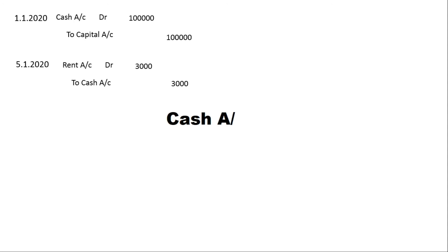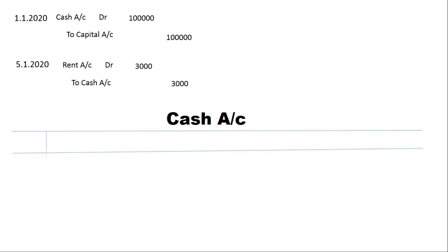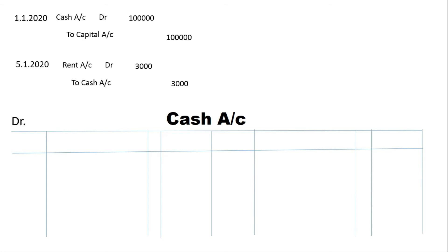All the entries we have posted on this cash account — we have to put cash account at capital, 1,000,000. That means rent account at cash account. That is why we post the first entry for the cash account.